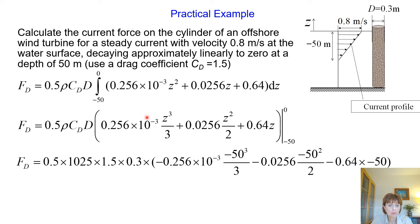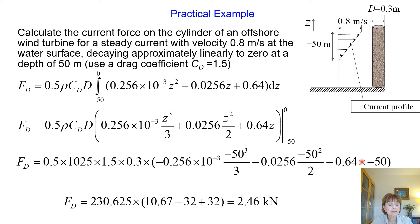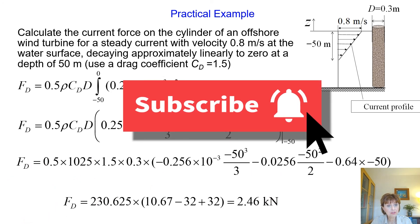Only the term evaluated at Z = −50 remains. By calculating all these expressions, the drag force generated by the C-current is equal to 2.46 kN. This is how you calculate the C-current drag force for a steady C-current on a cylinder of an offshore wind turbine. Thank you very much. Goodbye!